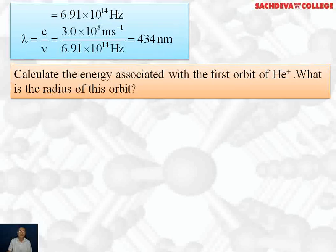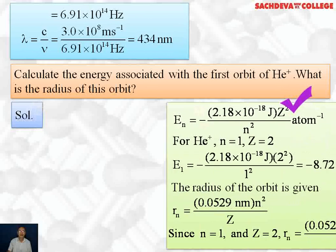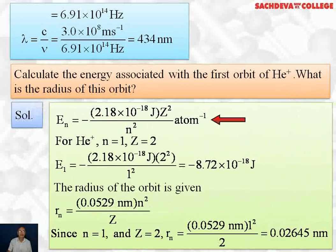Next question. Calculate the energy associated with the first orbit of helium ion. What is the radius of this orbit? Energy Eₙ equals -2.18×10⁻¹⁸ J × Z²/n² per atom. For helium ion, n=1 but Z=2. So we substitute Z² which means 2². So the answer comes out to be -8.72×10⁻¹⁸ joules.